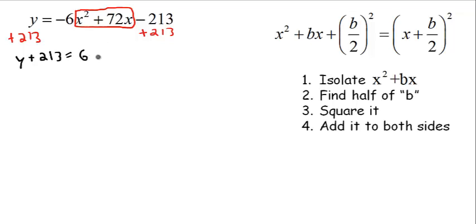We've got -6x² + 72x. Like before, we need to get the x² and x terms by themselves. So let's factor out -6. Rewriting: y + 213 = -6(x² - 12x). I'll leave this open because we're going to add in a number from the next steps.